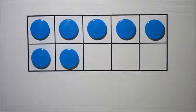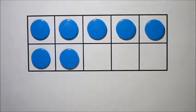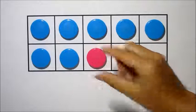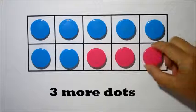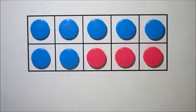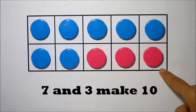Let's count the number of spaces. 1, 2, 3. We need 3 more dots to make 10. So, 7 and 3 make 10.